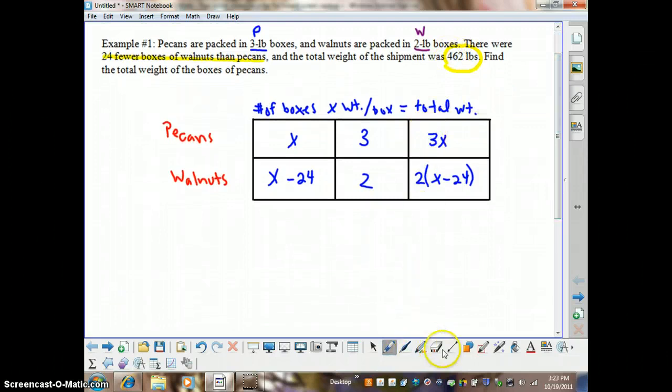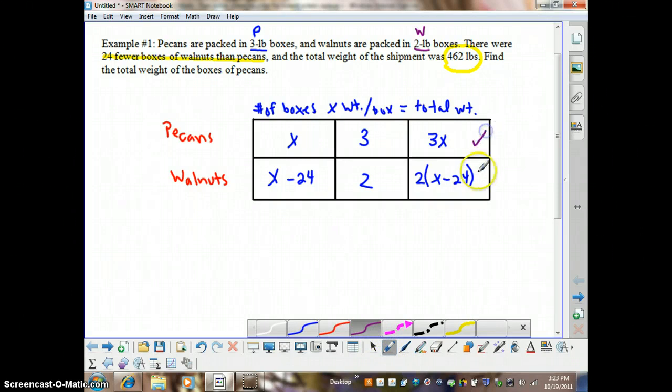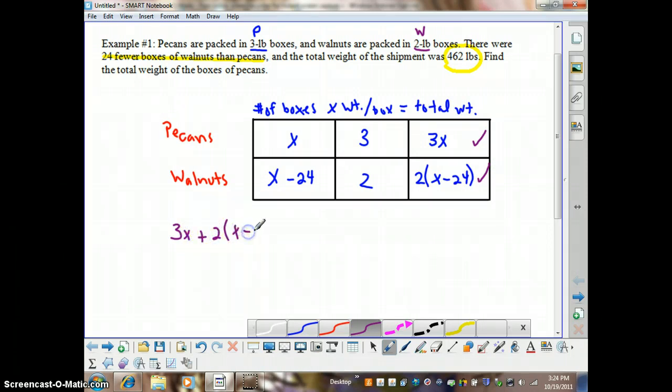And we know that the total weight is 462. So we're going to get our equation by taking the total weight of the pecans plus the total weight of the walnuts and adding those together. So our equation becomes 3x plus 2 times the quantity x minus 24 equals 462.